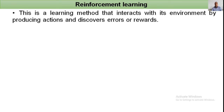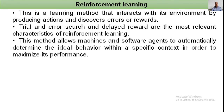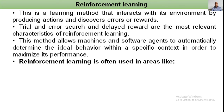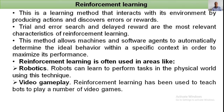Reinforcement learning is a method that interacts with its environment by producing actions and discovers errors or rewards. Trial-and-error search and delayed rewards are the most relevant characteristics. This method allows machines and software agents to automatically determine ideal behavior within a specific context to maximize performance. Reinforcement learning is used in robotics — robots learn to perform tasks in the physical world — and in video gameplay, where it has been used to teach bots to play video games.